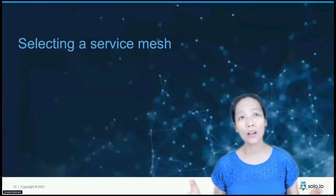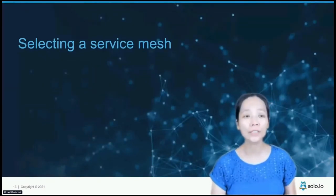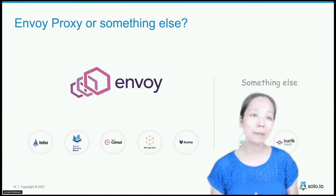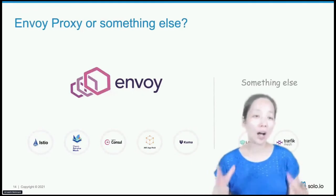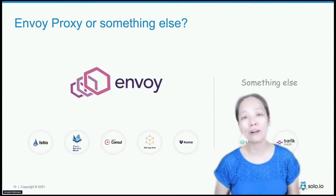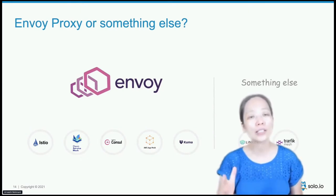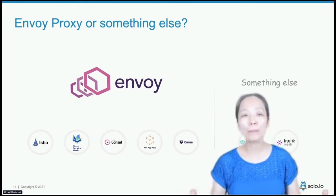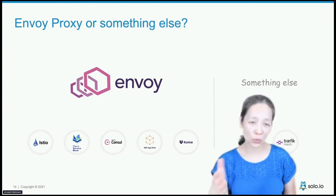How do you select a service mesh? First, think about the sidecar proxy on the data plane — are you going with Envoy or something else? The industry has settled on Envoy as the default proxy for service mesh, mainly because Envoy is battle-tested in production environments like Lyft, and it has a very mature, diverse community. Istio, Consul Connect, App Mesh, Kuma, and Open Service Mesh all use Envoy, with certain exceptions you'll want to check.